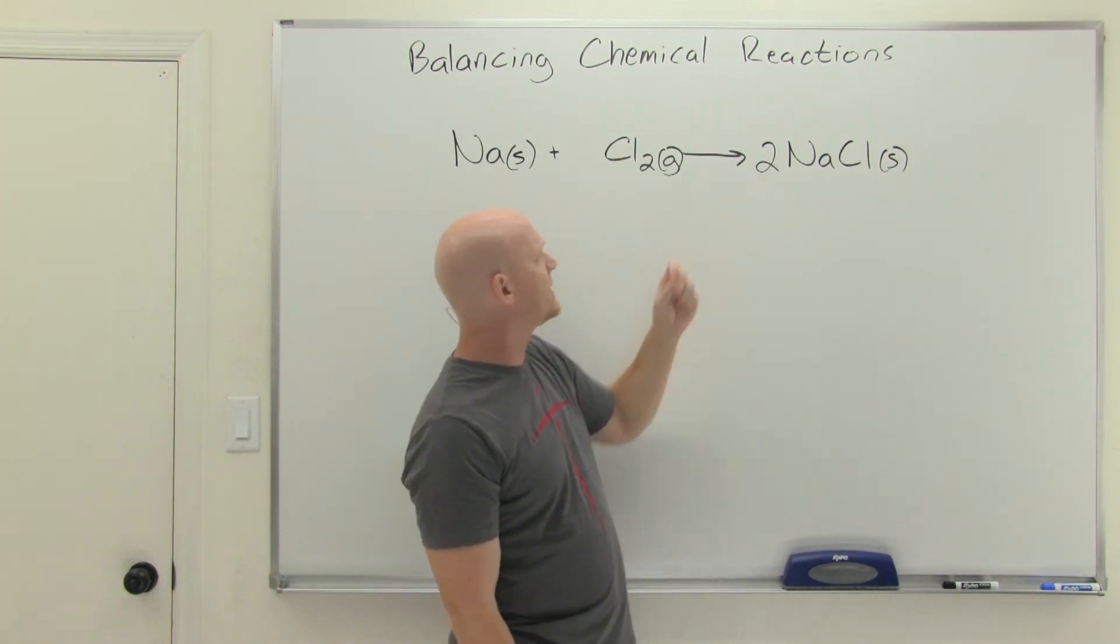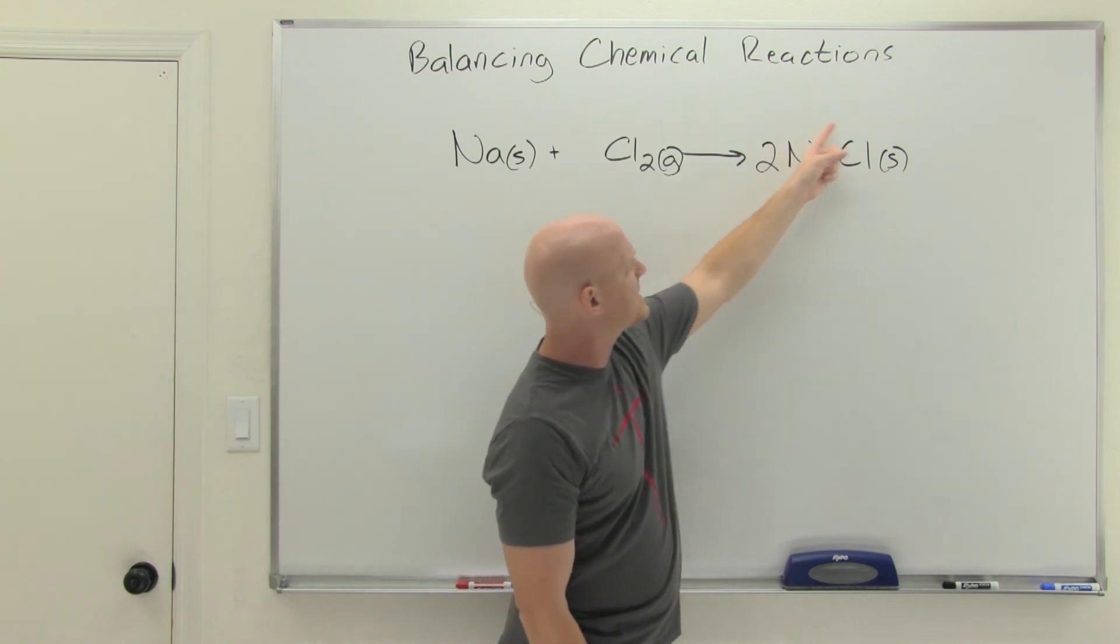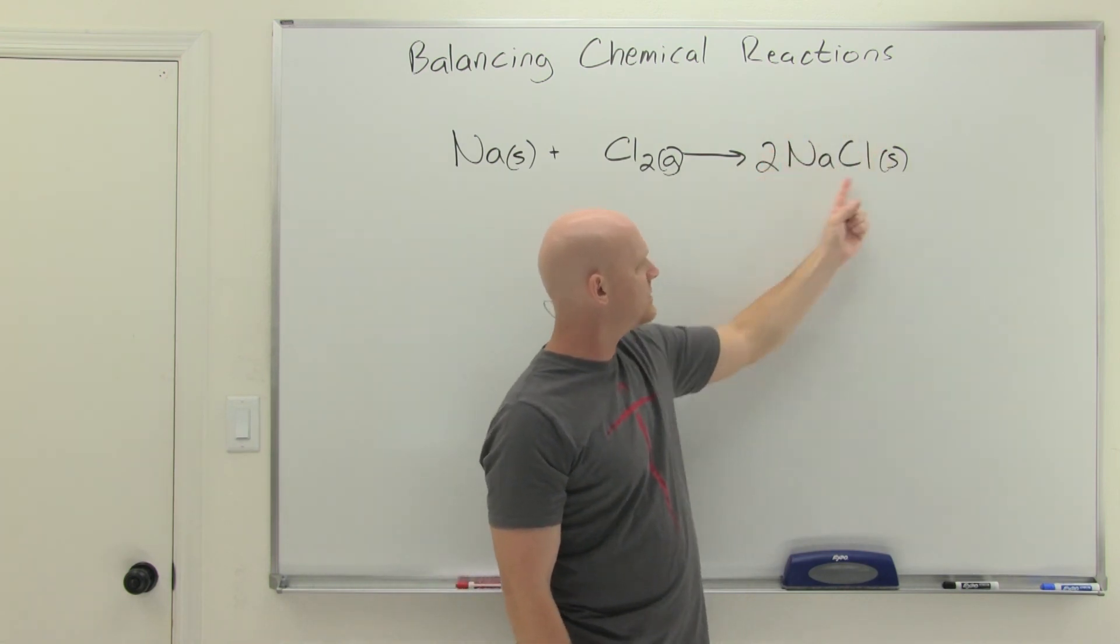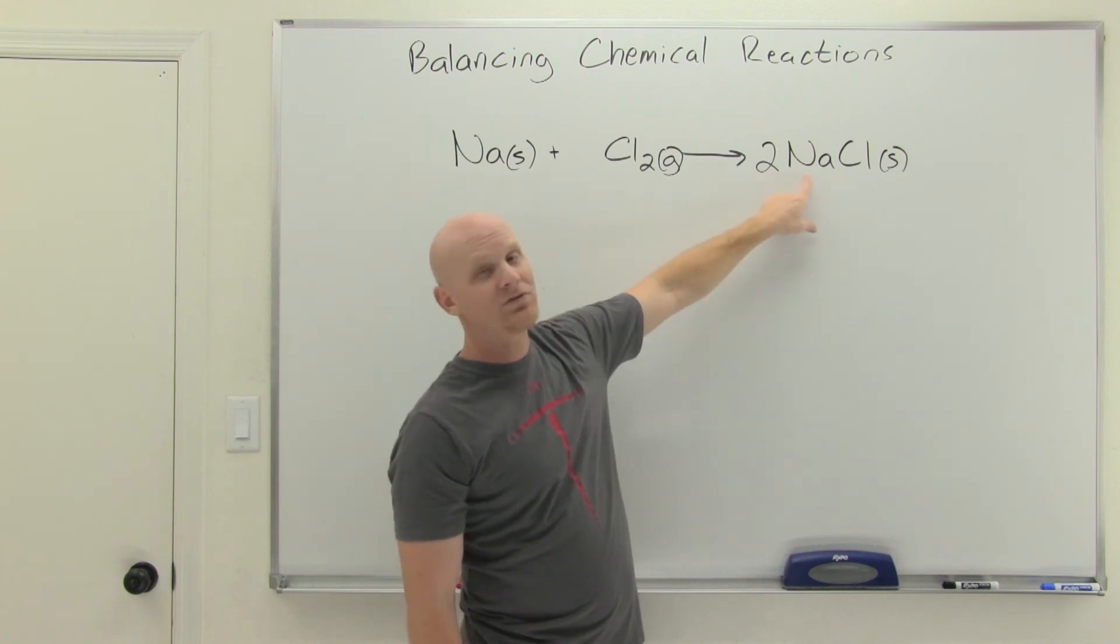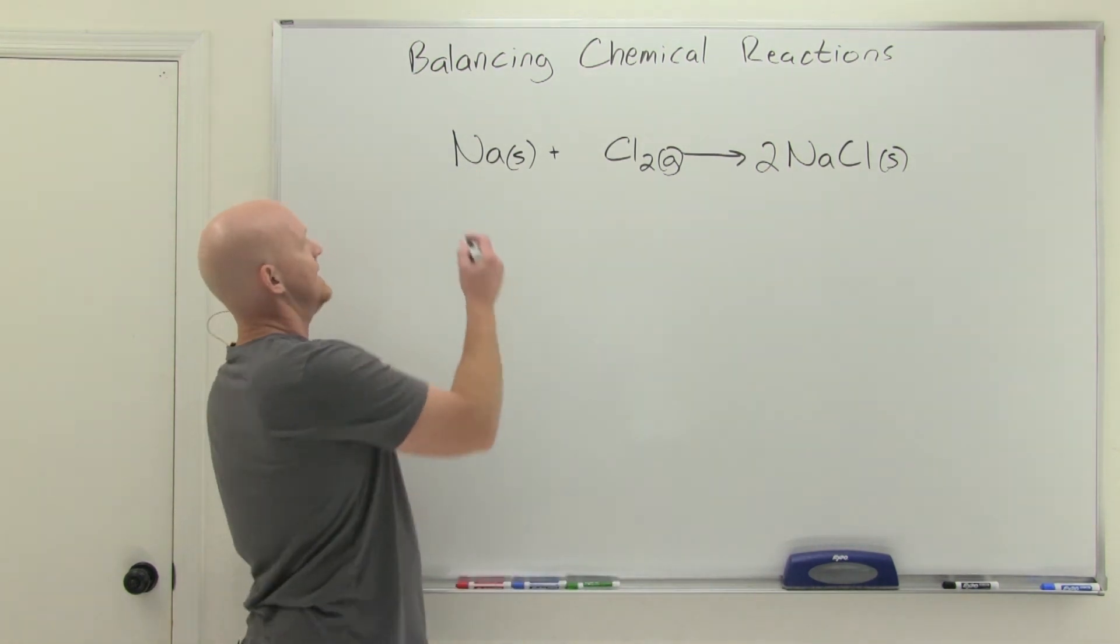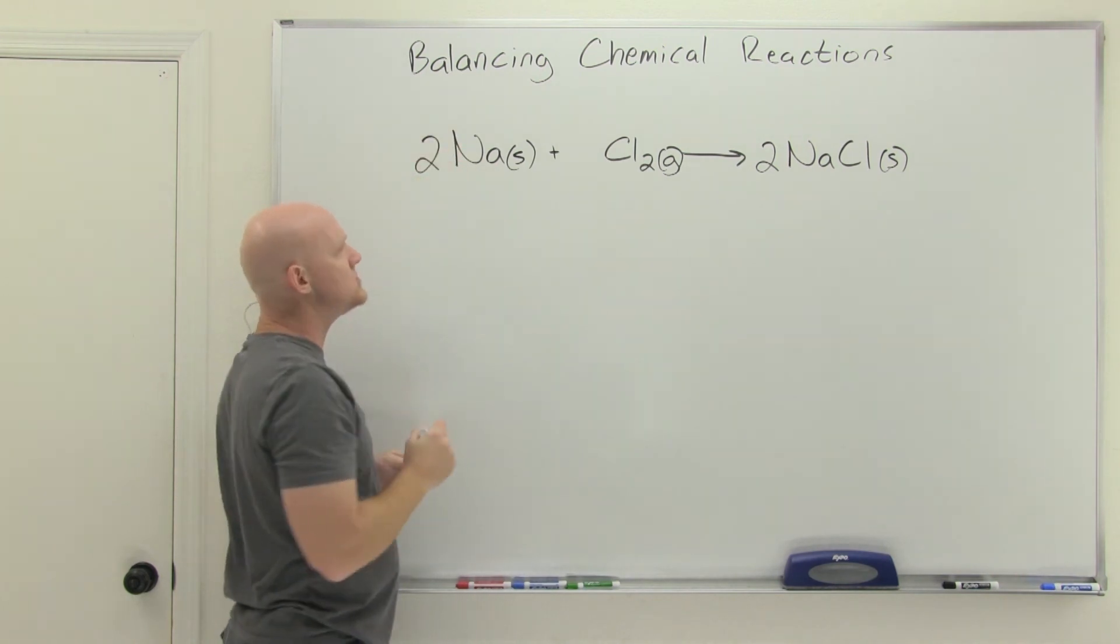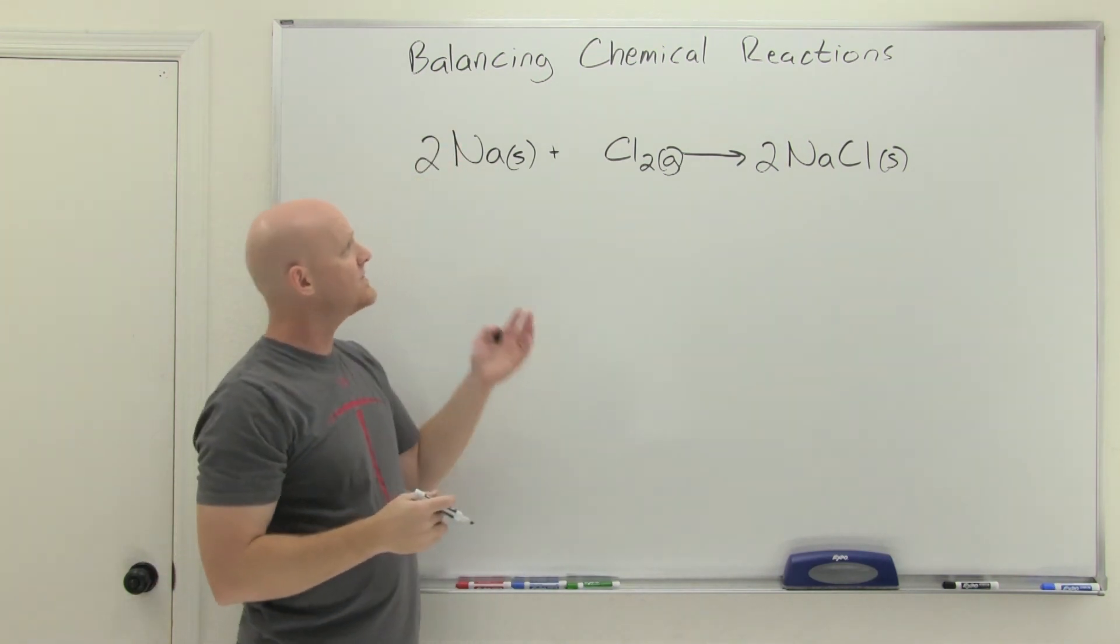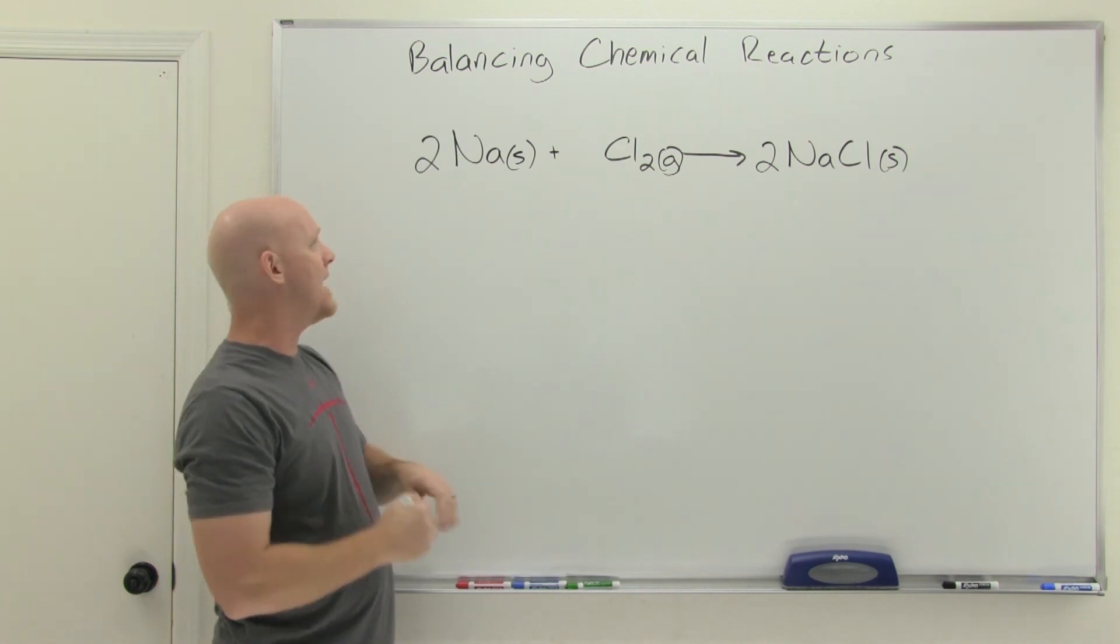Now, the problem, though, is that now the chlorines are balanced. I've got two chlorines on this side, and since I have two of the entire NaCl, that also gives me two chlorines on this side. But now, I've also got two sodiums on this side. I only had one on this side. And so that's going to force me to put a two over here as well.